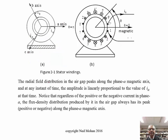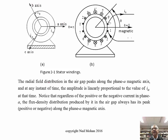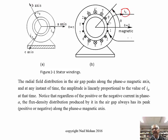Just to once again emphasize, these quantities are all peaking along the magnetic axis — in this case, phase A. Whether it's in the positive or negative direction depends upon the current I sub A. If it's positive, these quantities peak in the positive direction of this magnetic axis; otherwise they're in the opposite direction.